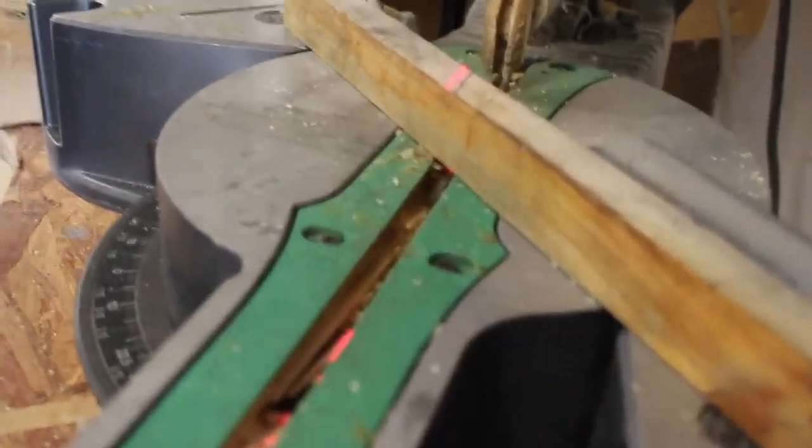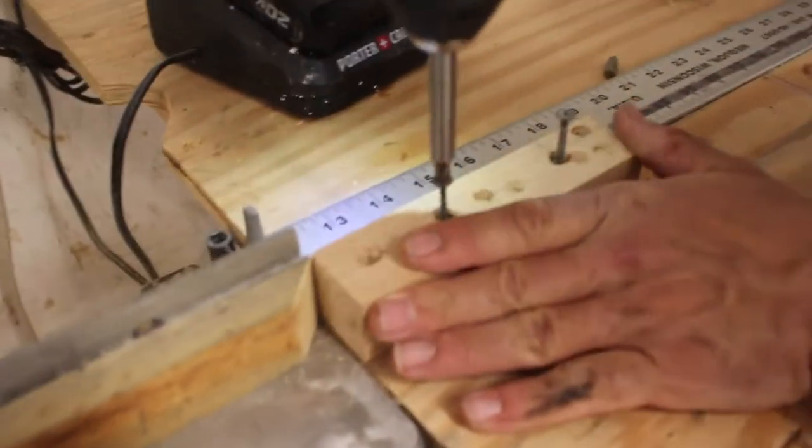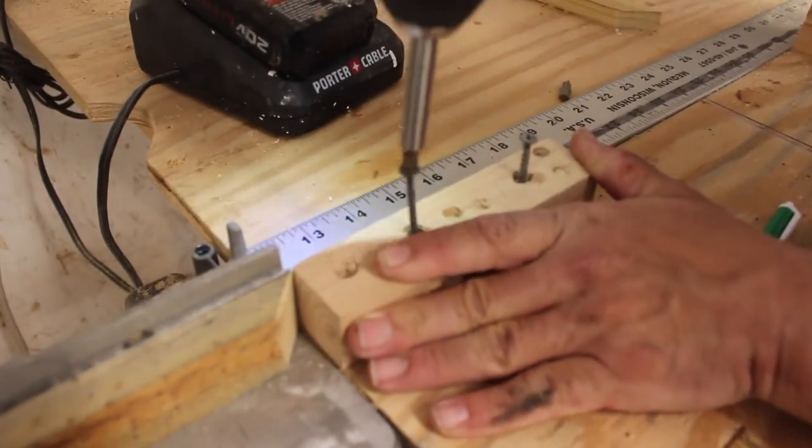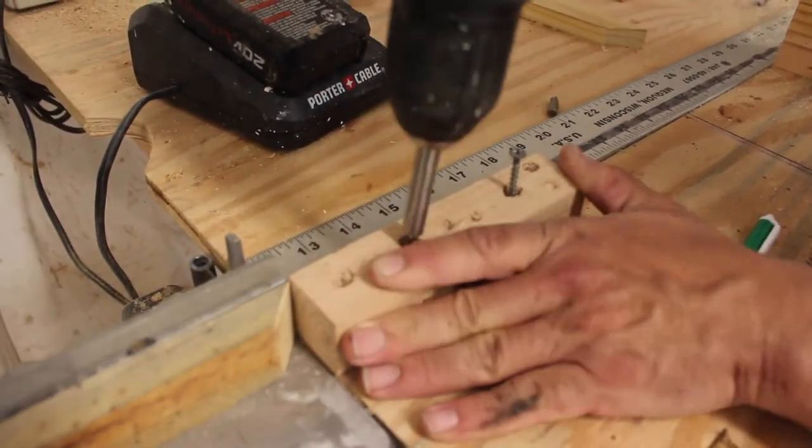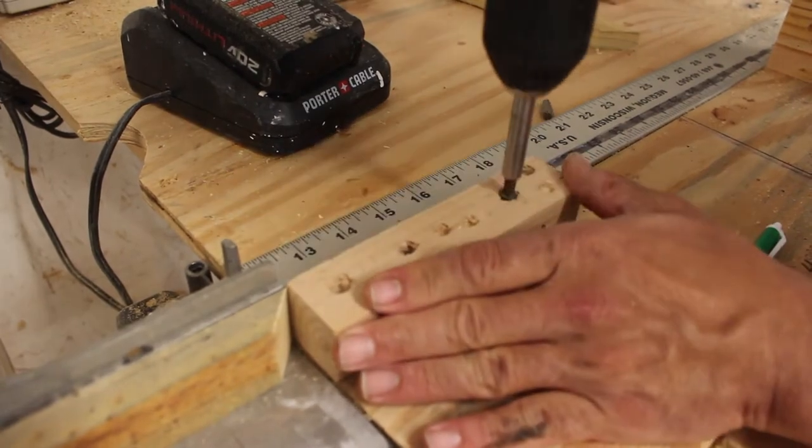A one by four can be ripped in half to give you two pieces. Otherwise you can use a 1 by 2 furring strip with overall dimensions of 3/4 inch by 1 and 1/2 inch.